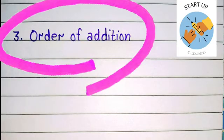Now let's talk about the third addition fact, that is order of addition. Children, numbers can be added in any order; their sum will remain the same. Means if you are adding two numbers and you change the order, it will not affect the sum.